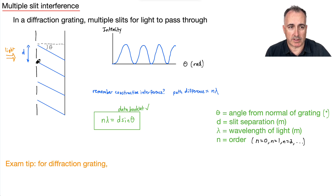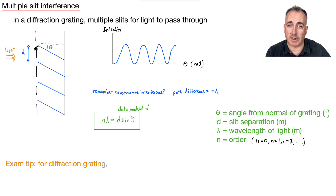Don't forget the angle is from the normal of the grating. So the way I've drawn it, this is the grating going this way, so the normal is 90 degrees to it. D is the slit separation, lambda is the wavelength of the light, and N is the order.